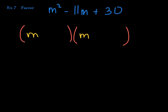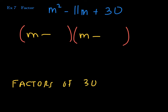Whatever we put in the remaining spots must multiply to give positive 30. The only way to get a positive product is if the signs are the same — both positive or both negative. Since the middle coefficient is negative, both signs must be negative. So we're looking for factors of 30 that add up to the middle coefficient, negative 11.